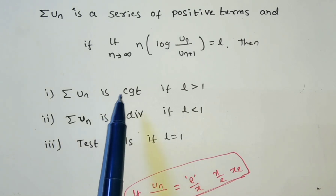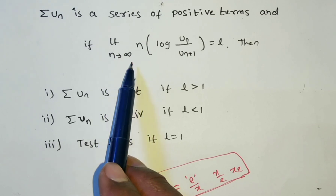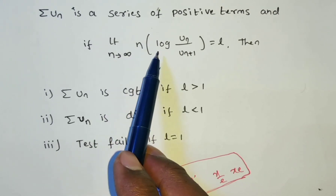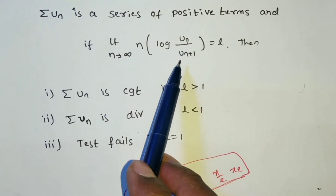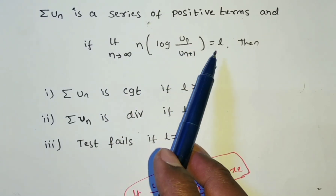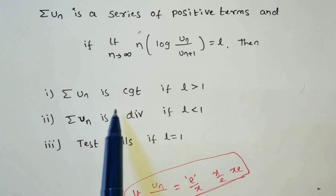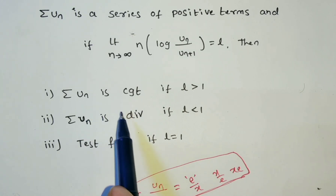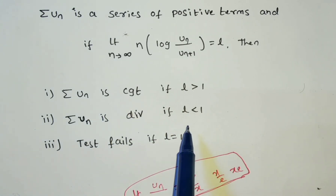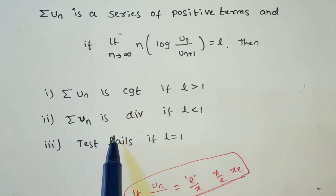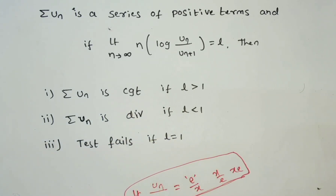To summarize: in the logarithmic test, we need to find the limit as n tends to infinity of n times log(un/un+1) equal to l. If l greater than 1, the series is convergent. If l less than 1, the series is divergent. If l equals 1, the test fails.